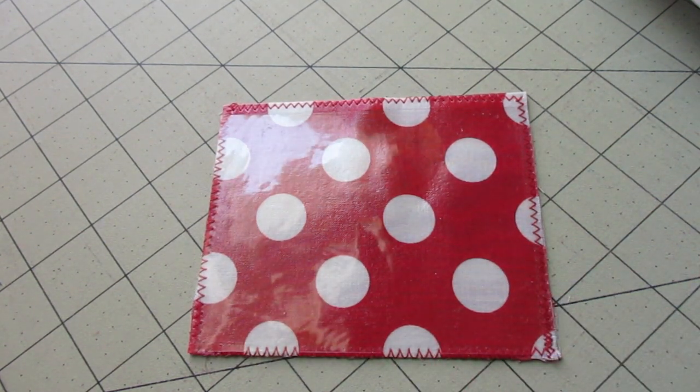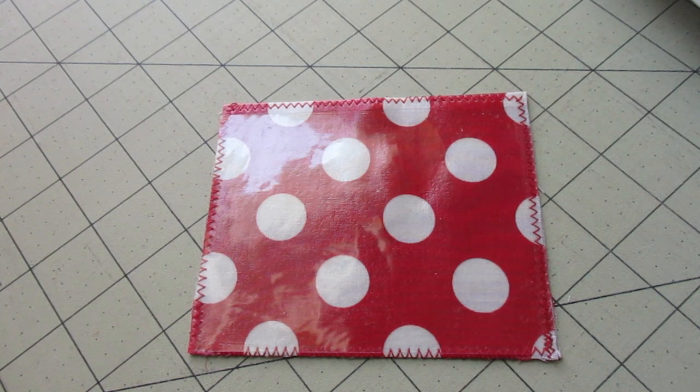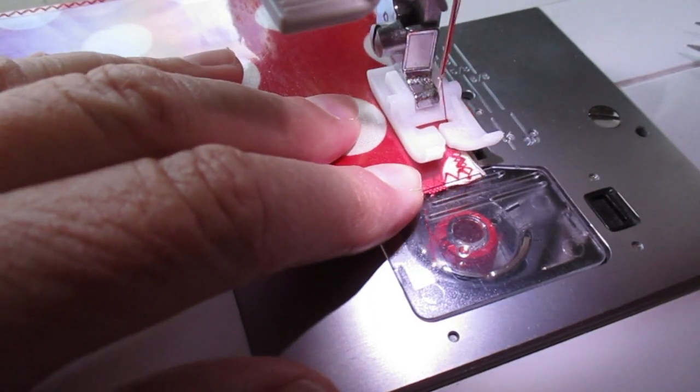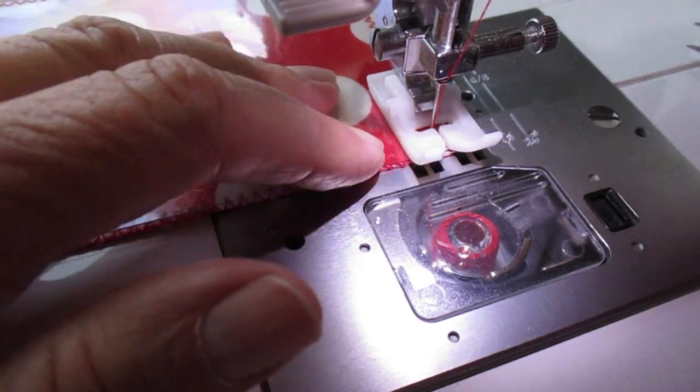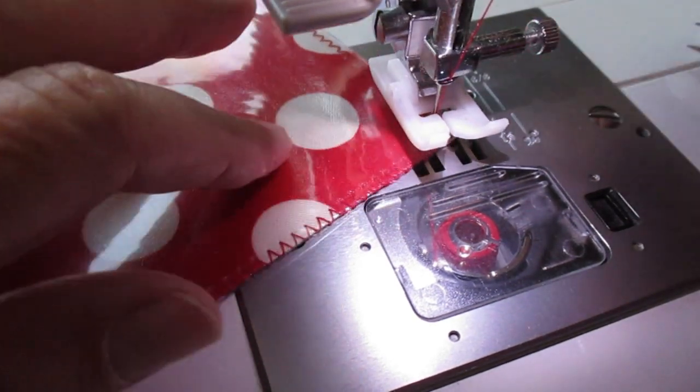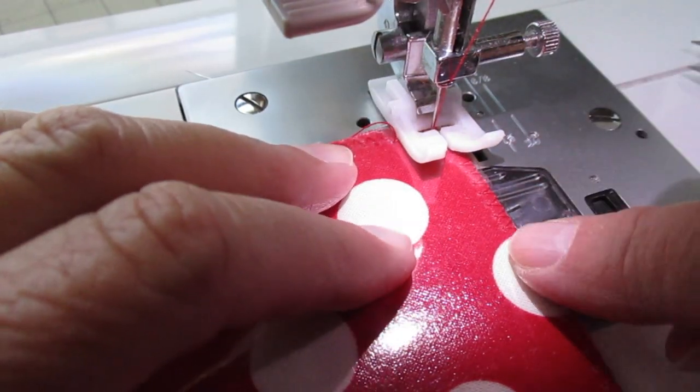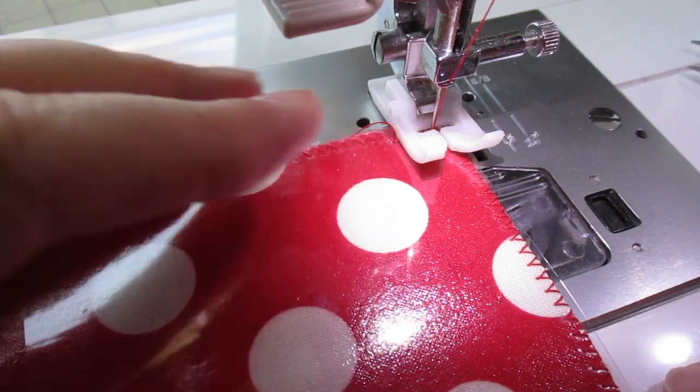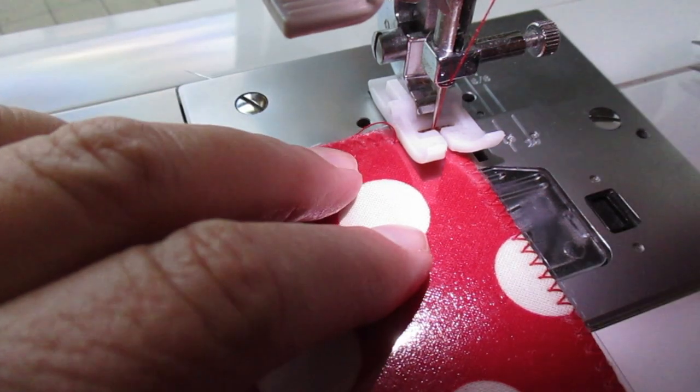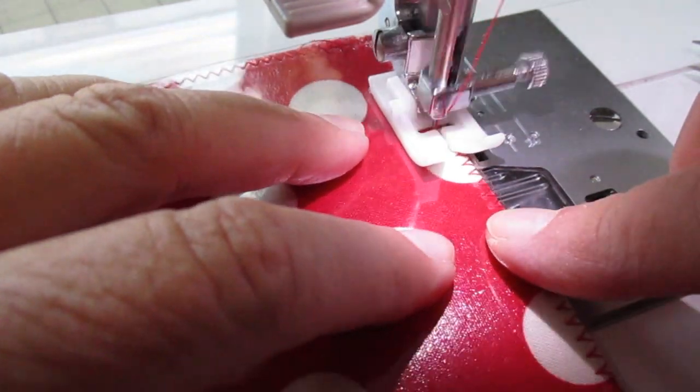This time we're going to use a straight stitch right inside that zigzag stitch. When you're sewing this clear vinyl, you want to make sure you have as few holes as possible, so make your stitch length a little bit longer. Again, start about a half inch up from the bottom right corner and stitch all around all four sides, again with the needle down as you pivot at the corners.